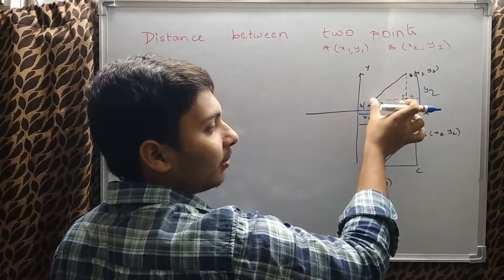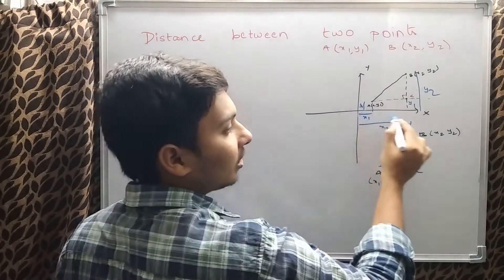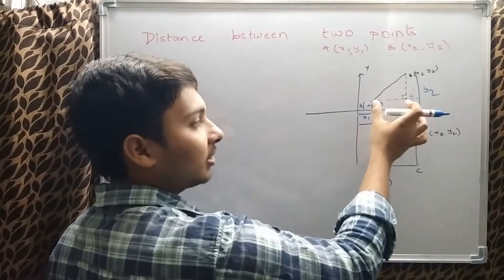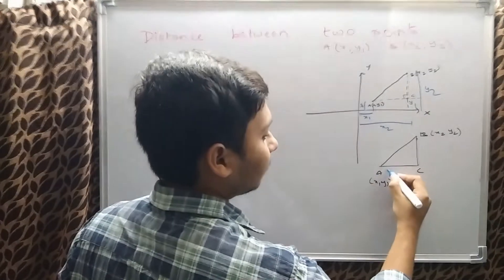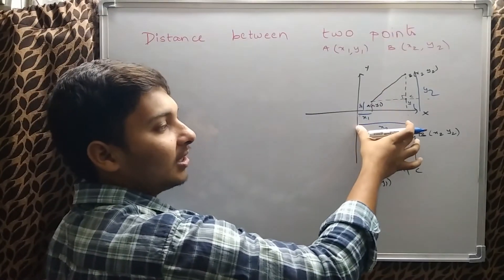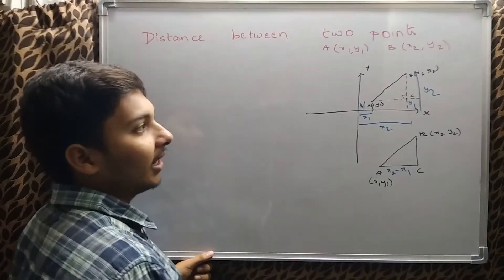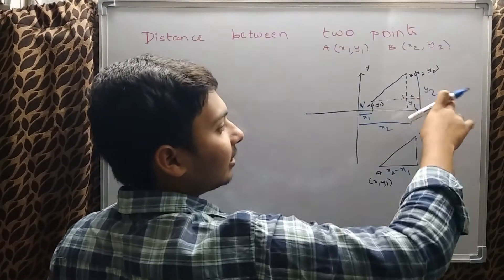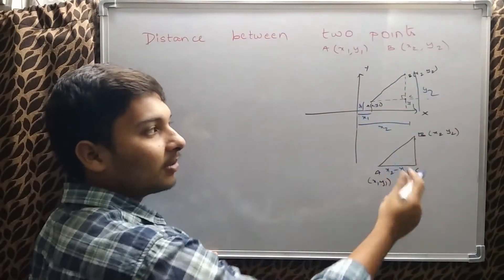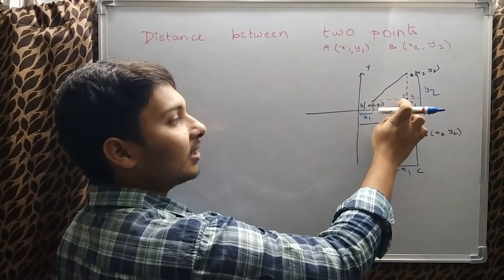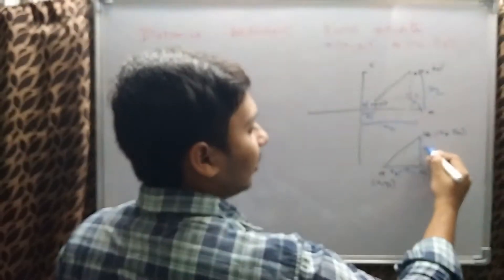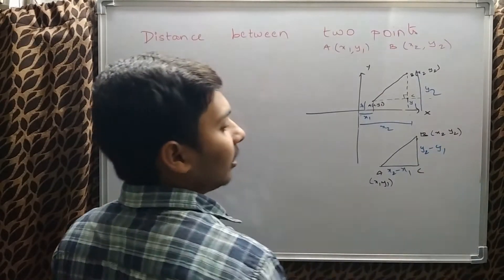Since the x-coordinate of A is x1 and the x-coordinate of B is x2, the length of AC becomes x2 minus x1. Similarly, the length of BC becomes y2 minus y1, by removing y1 from y2.